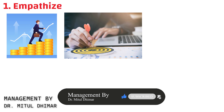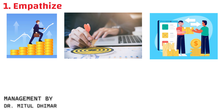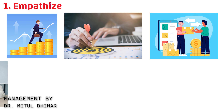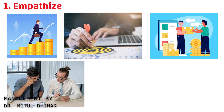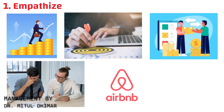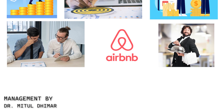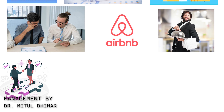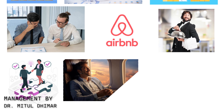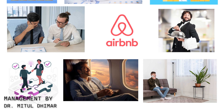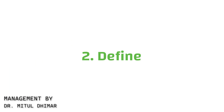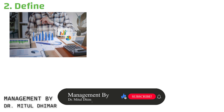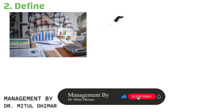Step number one: Empathize. The first step in the design thinking process is to empathize with your target audience. This means understanding their needs, desires, and challenges on a deep level. For example, Airbnb revolutionized the hospitality industry by empathizing with travelers who crave unique experiences and locals who wanted to monetize their space.